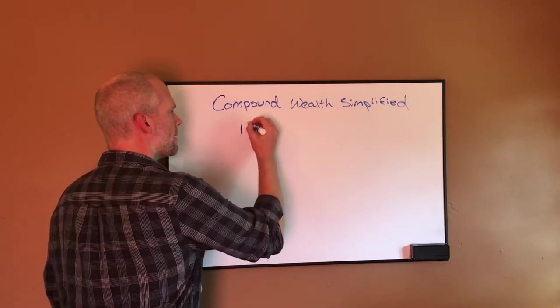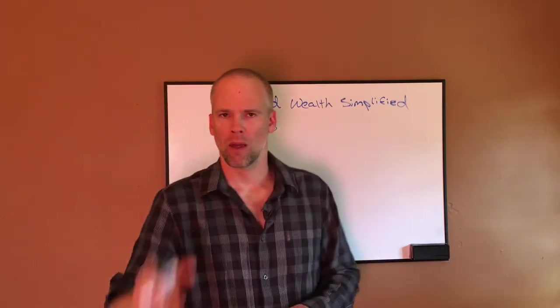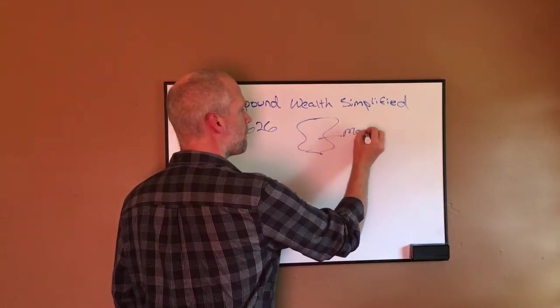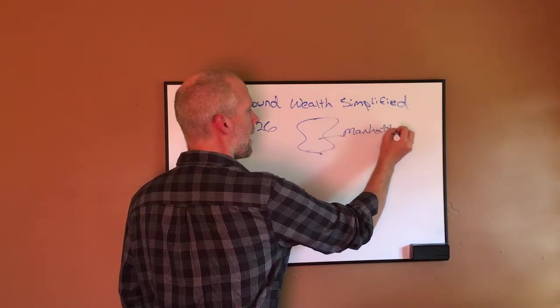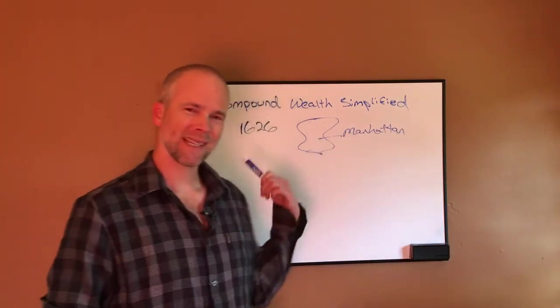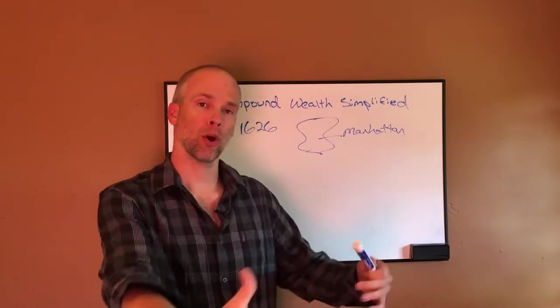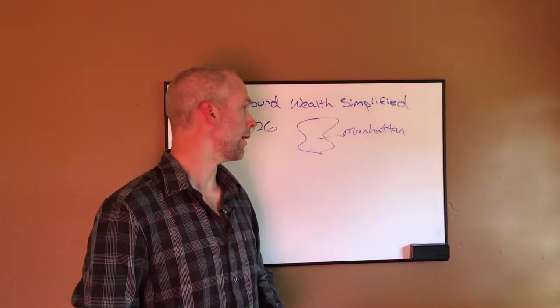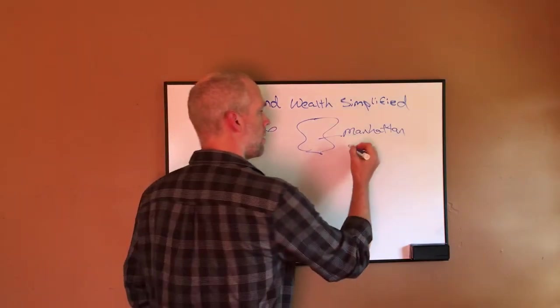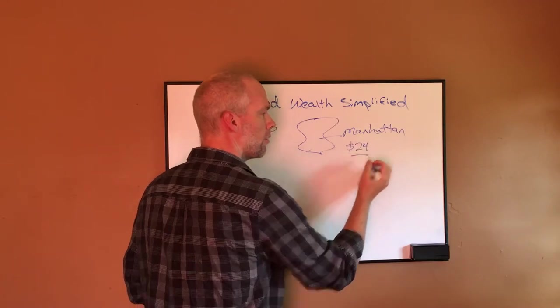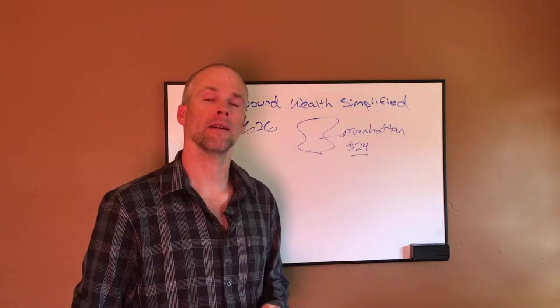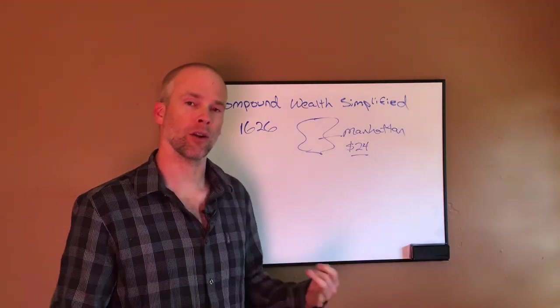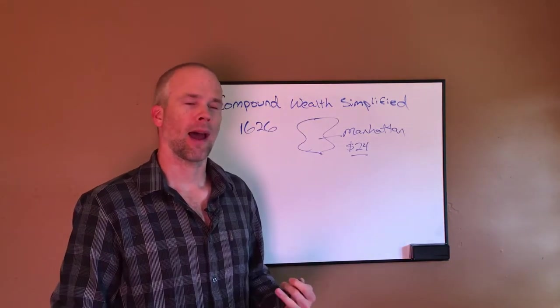So back in 1626, there were people living on the island of Manhattan. Now in 1626, the Dutch came along and they offered to purchase the island of Manhattan from the native peoples that were living there. And they offered $24 to buy the island of Manhattan. Now what we're going to try to figure out is, was that a good deal or not?